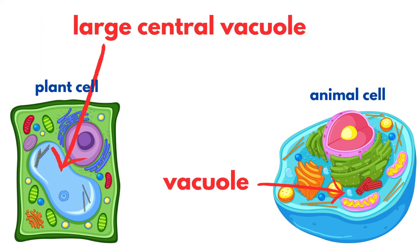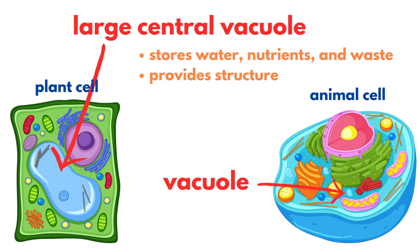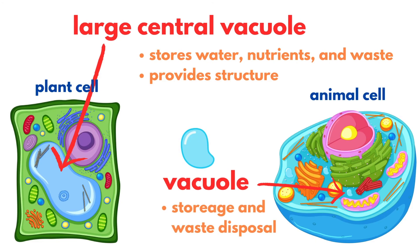Vacuoles are present in both plant and animal cells, but differ in size and function. Plant cells typically have a large central vacuole that stores water, nutrients, and waste, helping to maintain cell structure. In contrast, animal cells have smaller, more numerous vacuoles for storage and waste disposal.